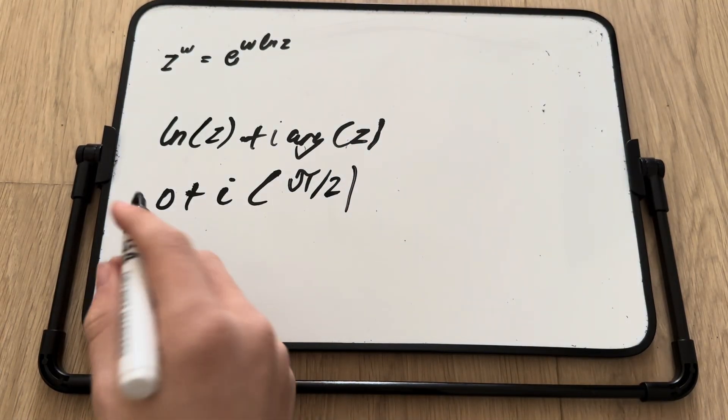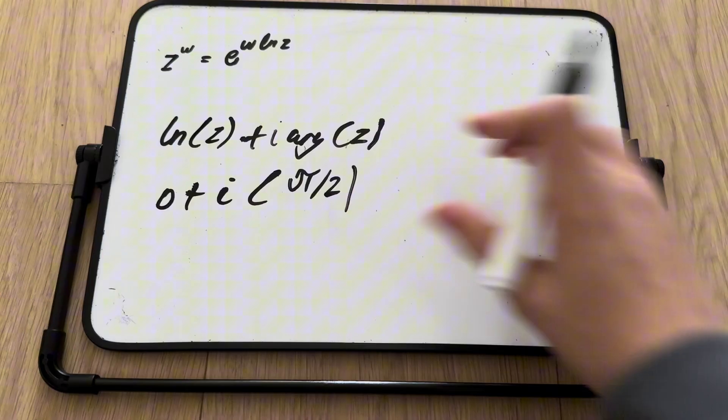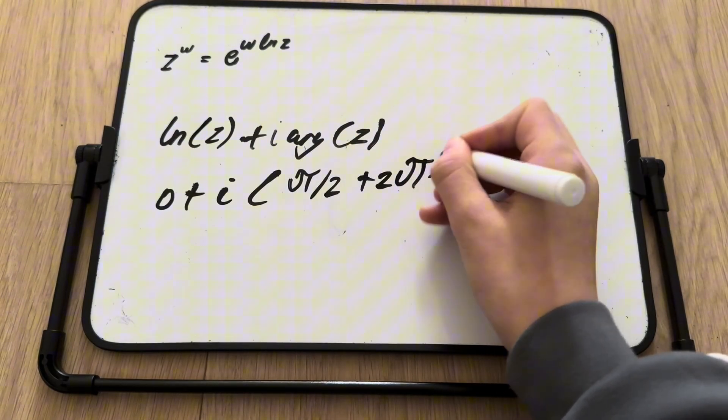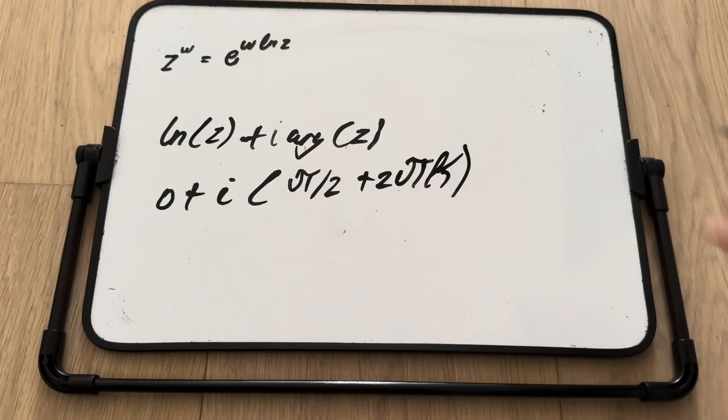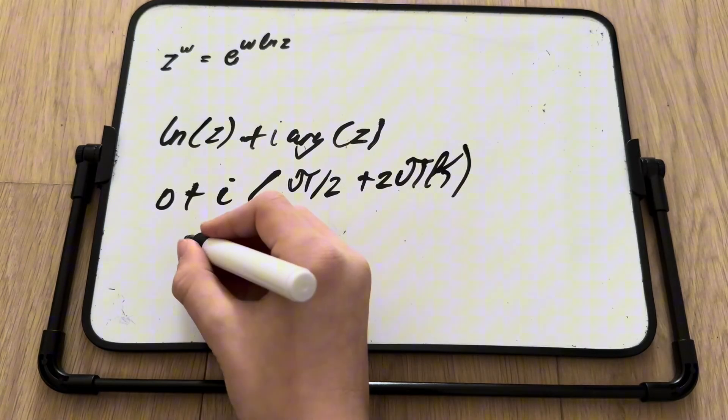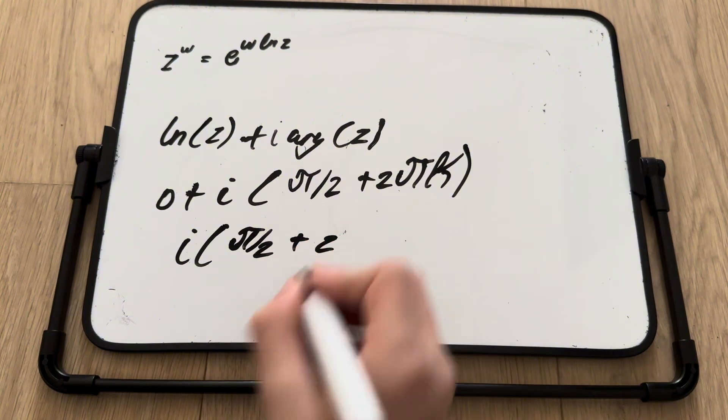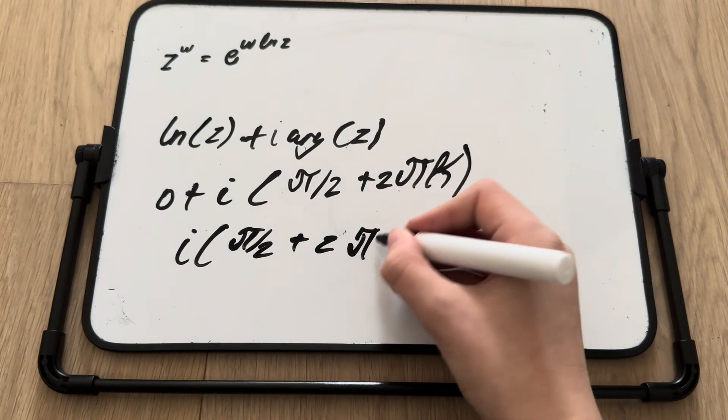Anyway, with this, actually wait, it's pi over 2 plus 2 pi k. And now we know that this is just i pi over 2 plus 2 pi k.